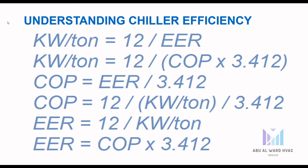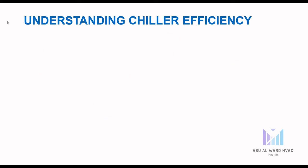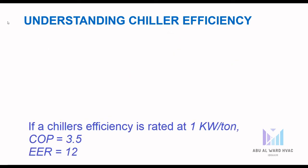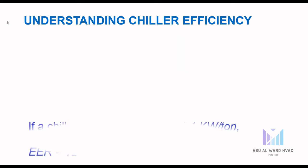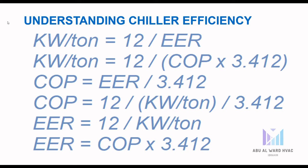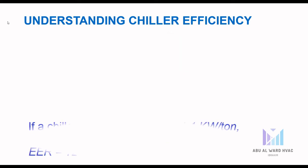Understanding chiller efficiency: below are a few simple formulas for converting between various units of energy efficiency for electric motor-driven chillers. All of these formulas can be used to calculate COP, kilowatts per ton, and EER. For example, if a chiller efficiency is rated at 1 kilowatt per ton, substituting into the formulas gives EER equal to 12, and COP equal to 12 divided by 3.412, which equals 3.5.